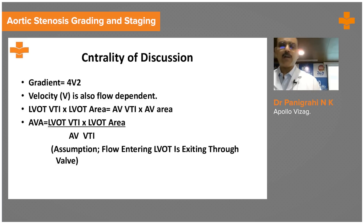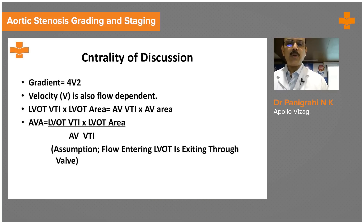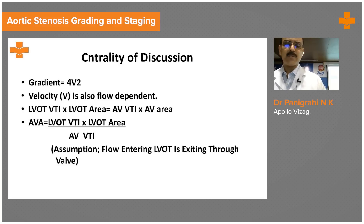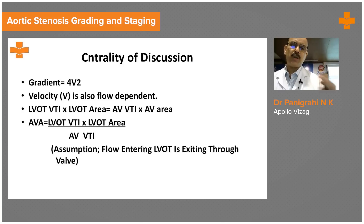If the flow across the aortic valve decreases, the velocity will decrease, and that will obviously underestimate the degree of stenosis. This is the central issue of this case. When we calculate the LVOT or aortic valve area using the continuity equation — LVOT VTI × LVOT area = AV VTI × aortic valve area — the valve area is also flow dependent.